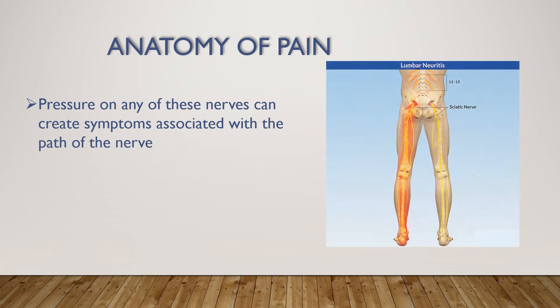This next slide shows impingement in an area in the lower back or the lumbar spine, which can create low back pain, but also can create radiating symptoms into the buttocks or gluteal region, down into the thigh or the hamstring region, into the knee, the calf, the ankle, and even into the feet and the toes.